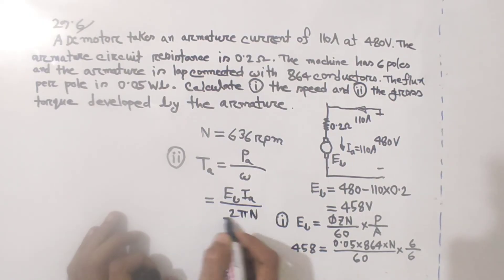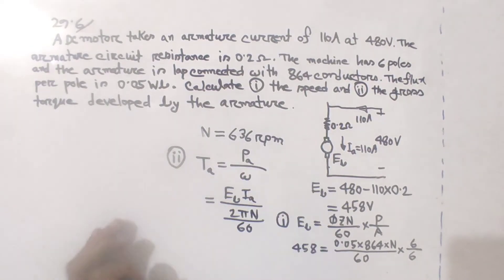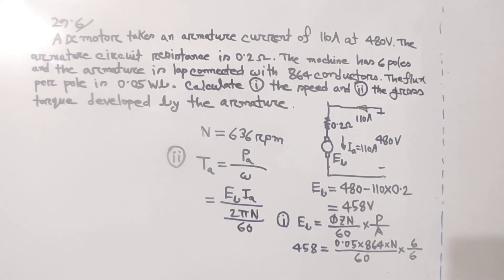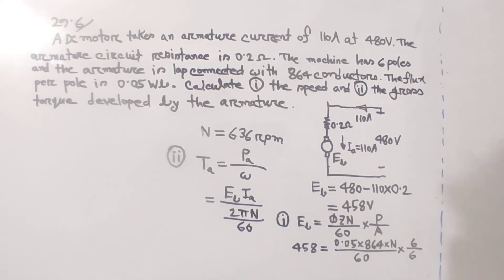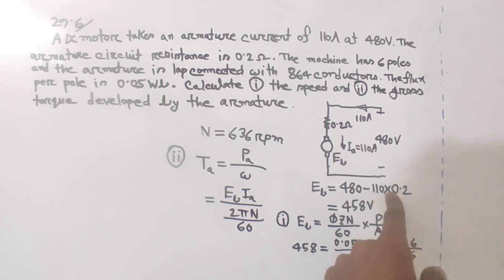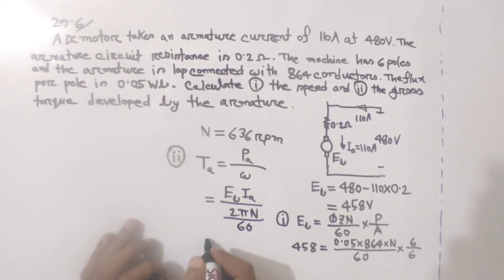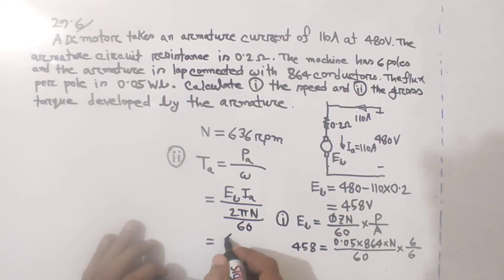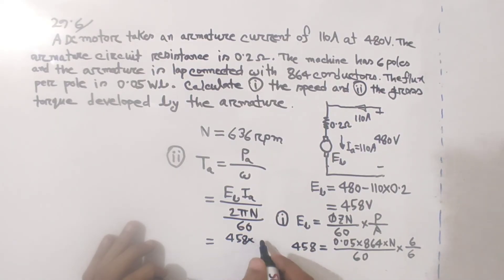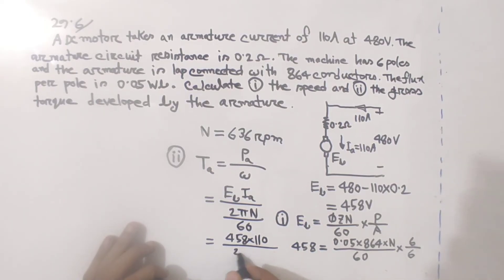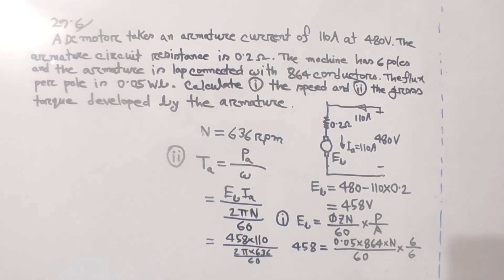Substituting the values: Ta = (Eb × Ia) / (2π × N / 60). We use Eb = 458V, Ia = 110A, and N = 636 RPM in this calculation.